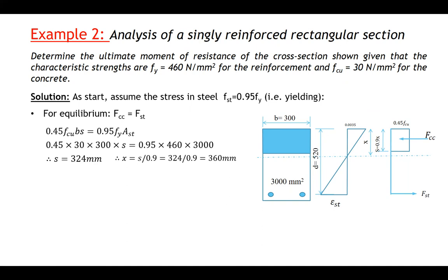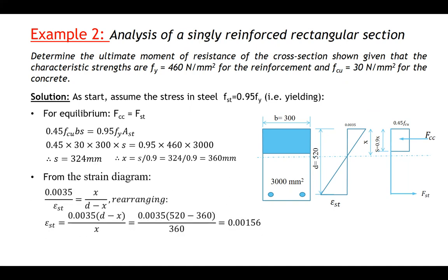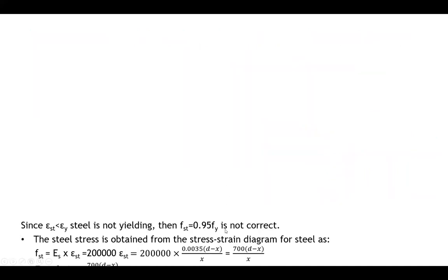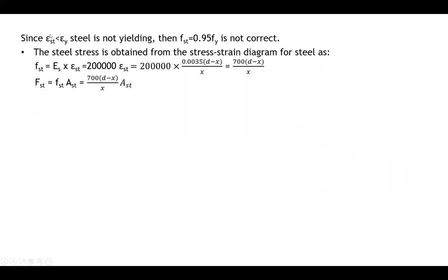Now let's check if the steel is yielding or not. From the strain distribution: ε_st = 0.0035 × (d − X) / X. We find the strain in the steel is 0.001, which is less than the yield strain of 0.002185. So the steel is not yielding. This means our first assumption is not correct and we have to recalculate S and X.